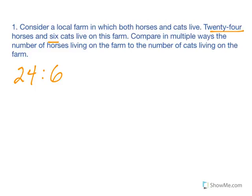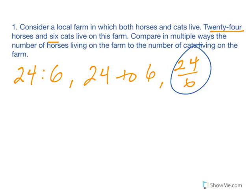Ratios can be written in different ways. The easiest way is if you look at it written as a fraction. Fractions can be reduced. I'm going to reduce this fraction to be 4 over 1. You can think of 24 horses to 6 cats, but you can also think of it as 4 horses for every 1 cat.